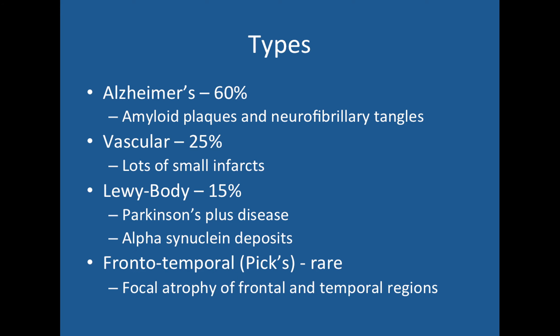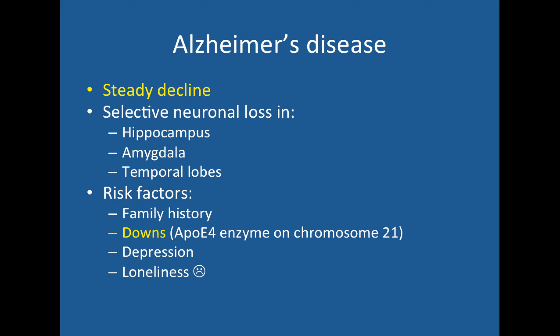Let's talk about dementia. There are four types to consider and by far the most common is Alzheimer's disease, with 60% of dementia cases being this type, characterised by amyloid plaques and neurofibrillary tangles. Vascular dementia involves lots of small infarcts or small strokes. Lewy body dementia is a Parkinson's plus disease characterised by alpha-synuclein deposits. Frontotemporal or Pick's dementia is rare and involves focal atrophy in the frontal and temporal regions.